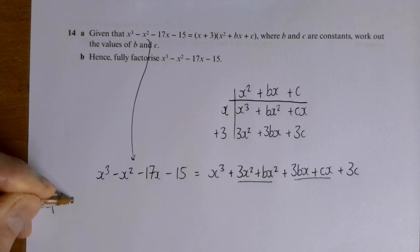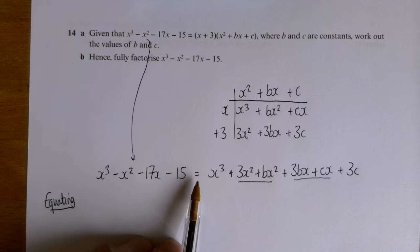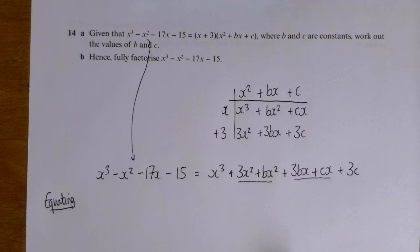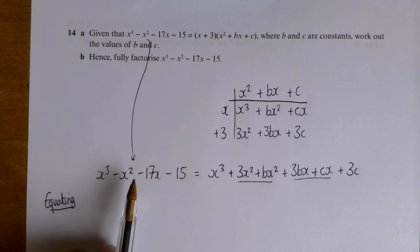And so now we can do that process called equating. And if you remember, I mentioned it in the last video, equating is saying that equal sign there means that this thing and this thing have got to be the same.